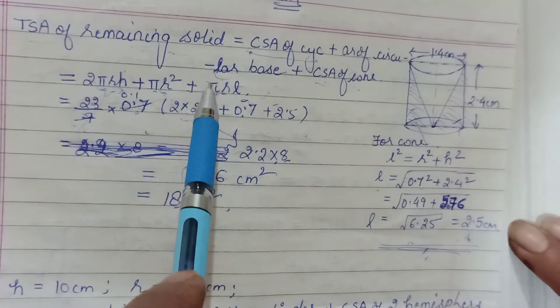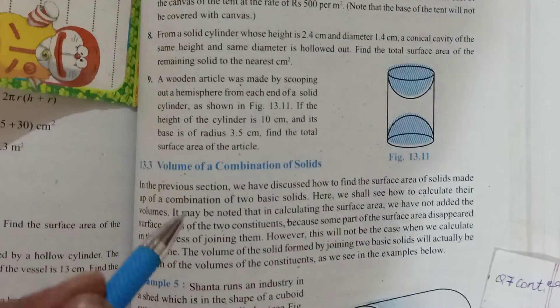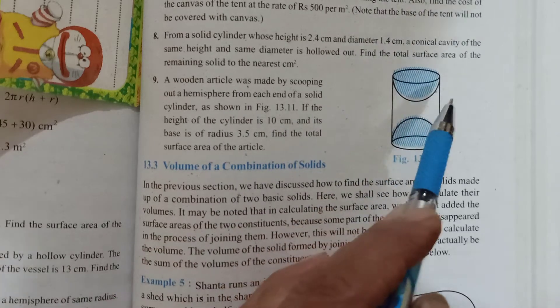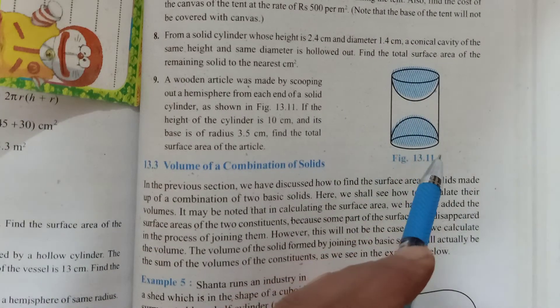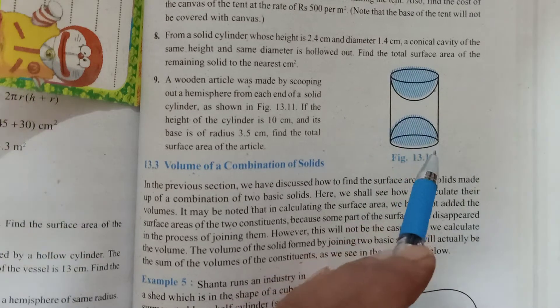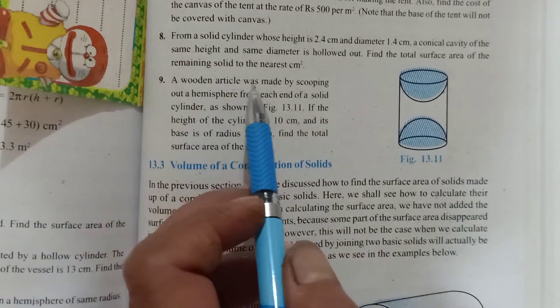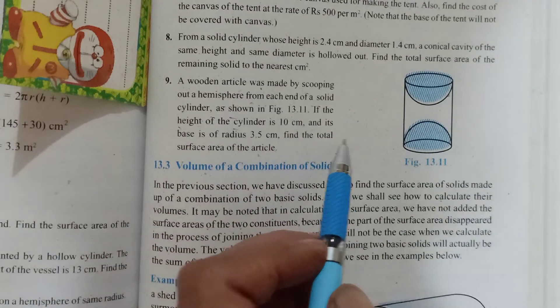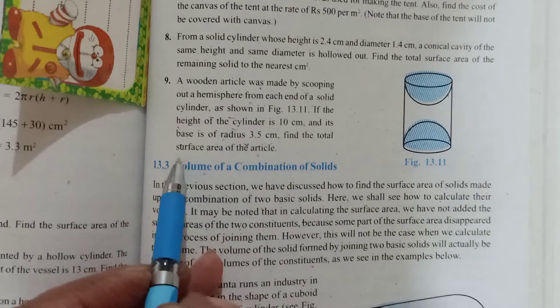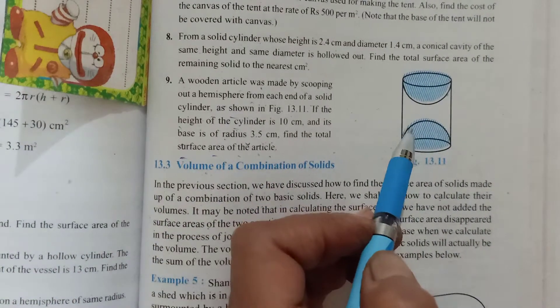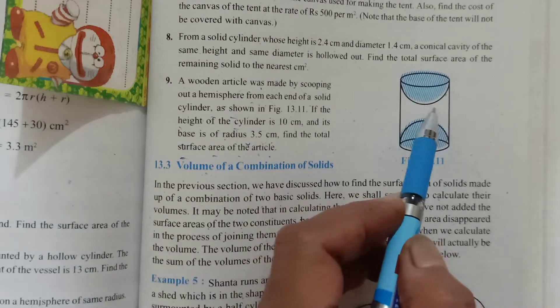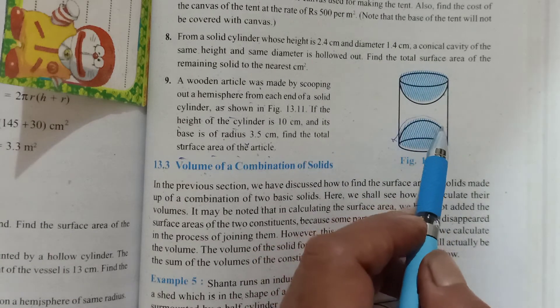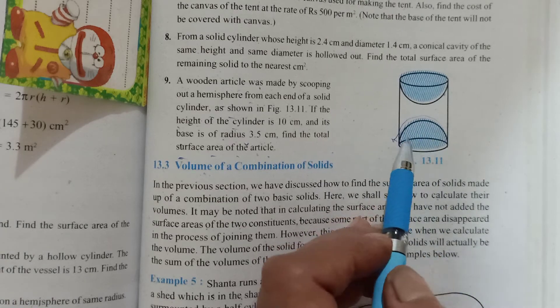Finally, let's take up the last question here, which says that a wooden article is made by scooping out hemispheres. We have to find the surface area of the article. So again, surface area - imagine what will show. In this one, you will see this cylindrical portion, from here you will see this hemisphere, from here you will see here, and here you will see again CSA of hemispherical part.